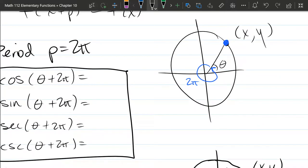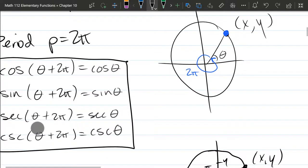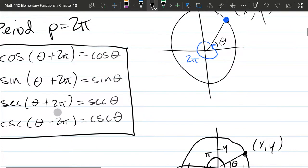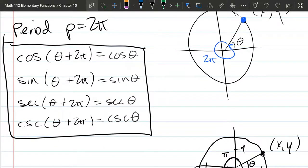However, we're only going to write the first four right here. So we got cosine theta plus 2π equals cosine theta. Sine theta plus 2π is sine theta. Secant, same thing, secant is 1 over the cosine, so it'll behave the same as cosine here. So it's just secant theta. Cosecant's the reciprocal of sine, so it'll repeat the same way sine does. Alright, these are the trig functions that have a period of 2π.